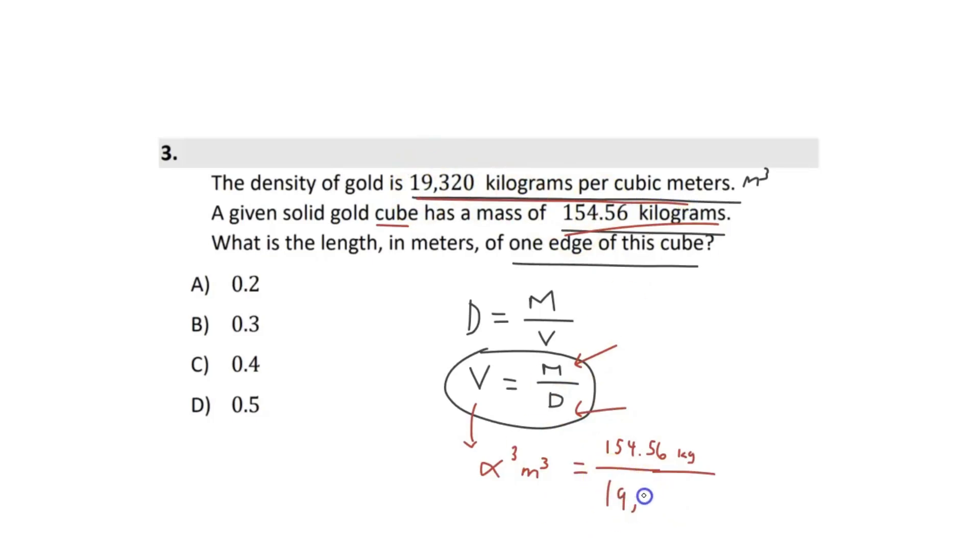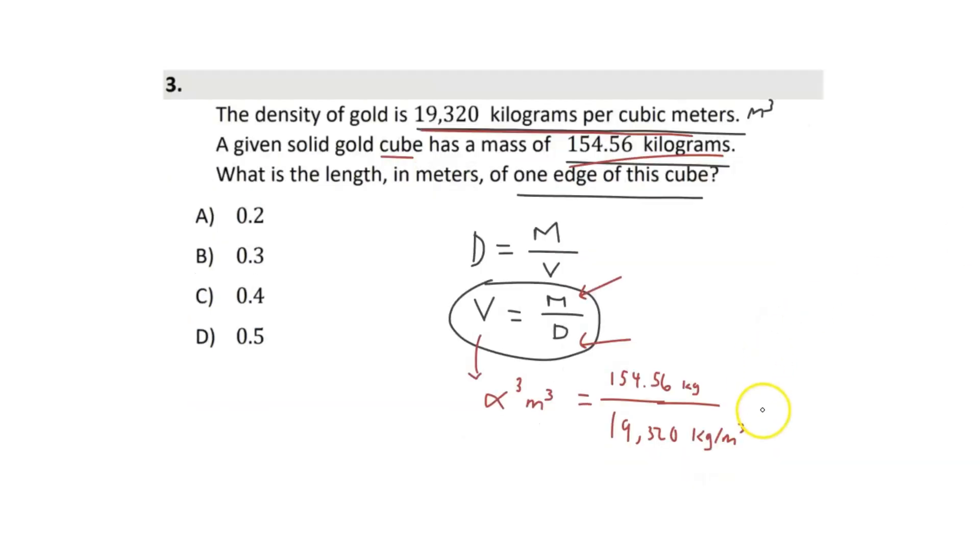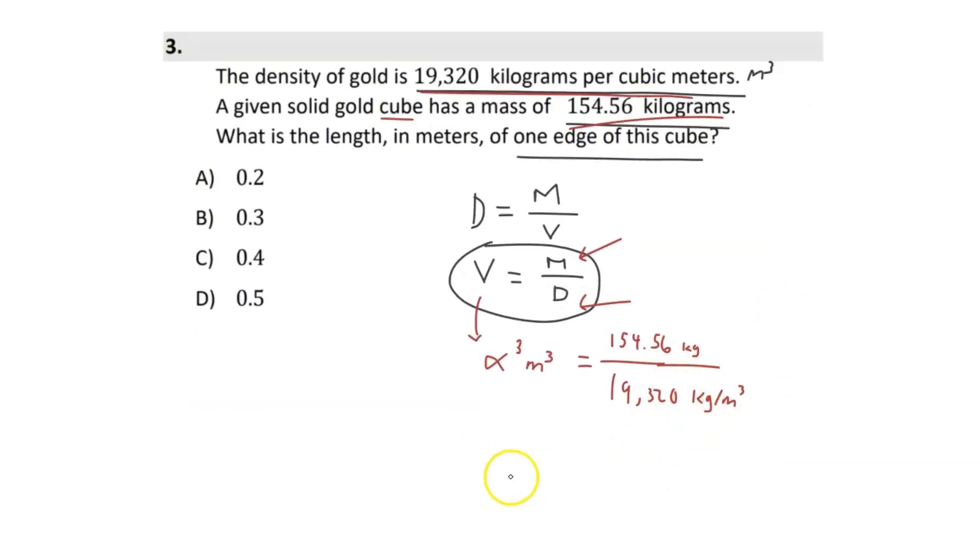Well, that is 19,320 kilograms. Kilograms is very hard to write with a mouse. You think I'd be pretty good at it by now. All right. Per cubic meters. Cool. So what can we do here? It actually works out super nicely for us because watch what happens. All right. If we just ignore the numbers for a second, we have meters cubed equals. Let's look at the right side specifically.